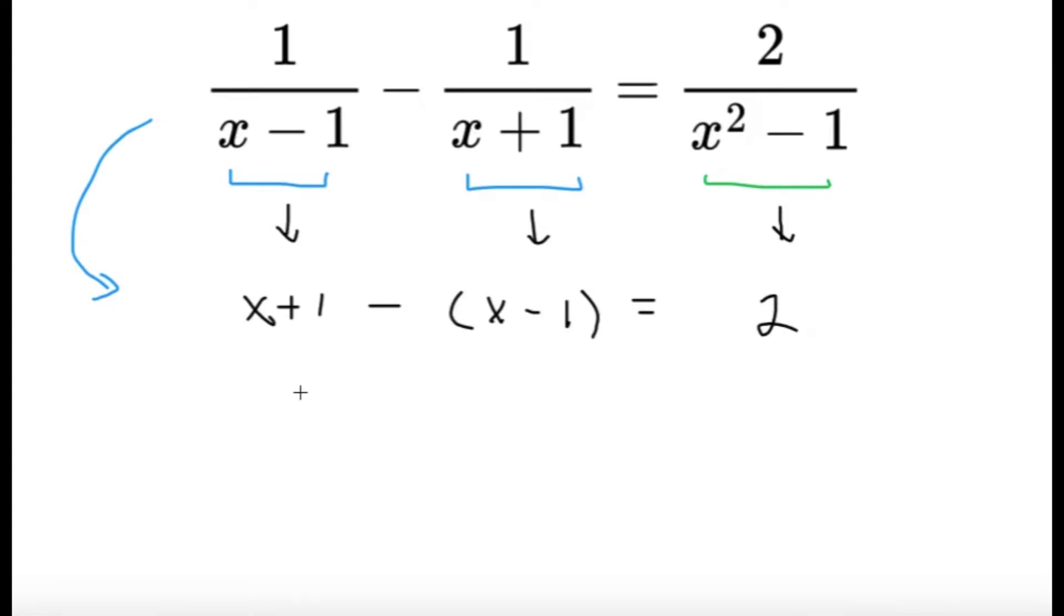Now, this gives us a very interesting result because x plus 1, I'm going to distribute the negative sign. So, it's going to be minus x plus 1 equals 2. Well, the x's here are going to cancel. And I'm going to get 1 plus 1, and I'm going to get 2 equals 2. So, it seems here that this equation is true always.